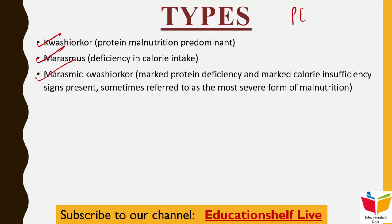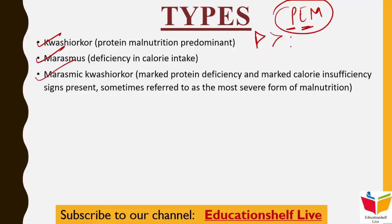In Kwashiorkor, protein is deficient but energy and calories intake is relatively adequate. In Marasmus, both protein and energy are severely deficient.